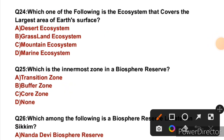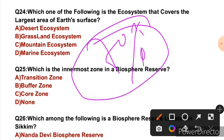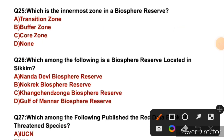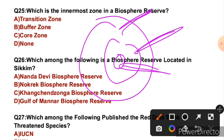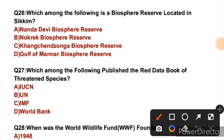Question 24: Which one of the following ecosystem covers the largest area of the Earth's surface? Water covers almost 70% of Earth, so the largest ecosystem is the marine ecosystem. So the right answer is D. Question 25: Which is the innermost zone in a biosphere reserve? A biosphere reserve has three zones: transition zone, buffer zone, and core zone. The innermost zone is the core zone. So the right answer is C.